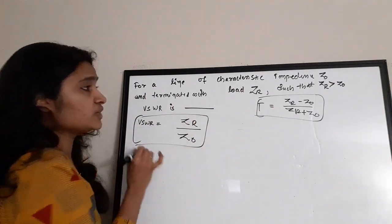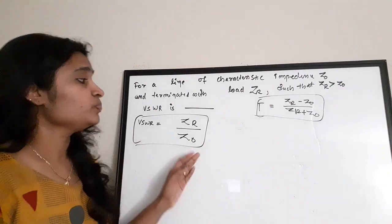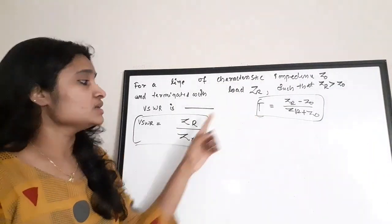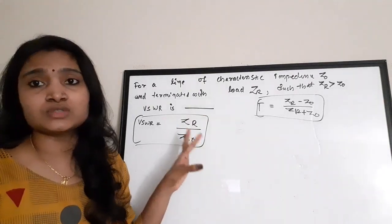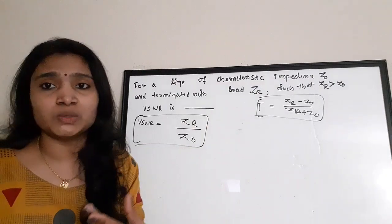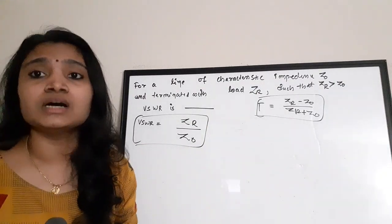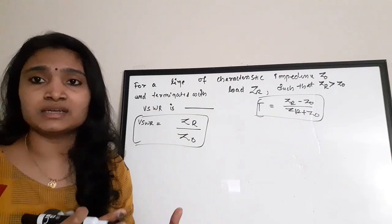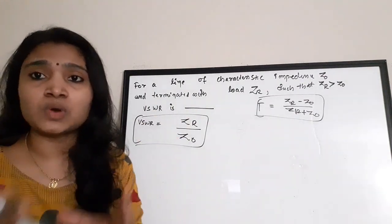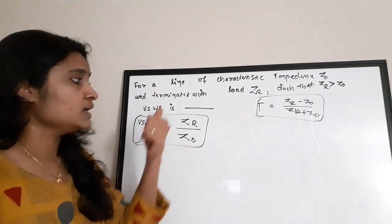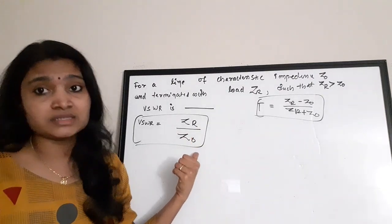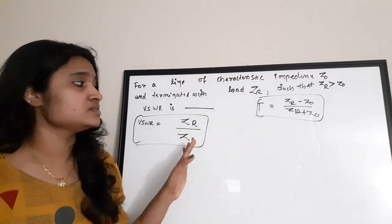So VSWR = ZR / Z0, where ZR is the load impedance and Z0 is the characteristic impedance. This gives a useful formula: if you want to find VSWR directly in terms of impedance values, VSWR equals the load impedance divided by the characteristic impedance of the transmission line.